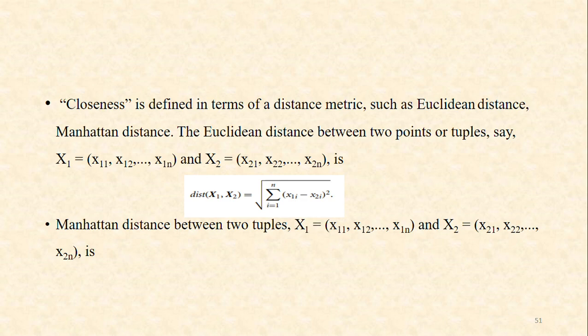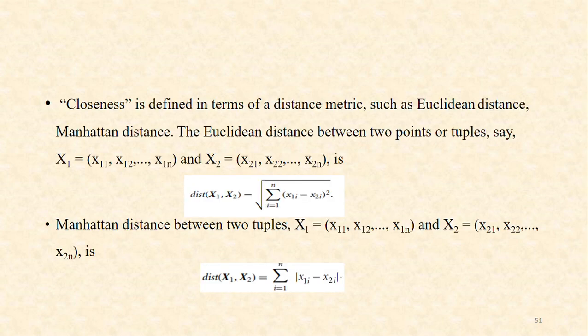The Euclidean distance is given as the square root of the summation from i=1 to n of (x1i minus x2i) squared. The Manhattan distance between two tuples x1 and x2 is given as the summation from i=1 to n of the absolute difference |x1i minus x2i|.